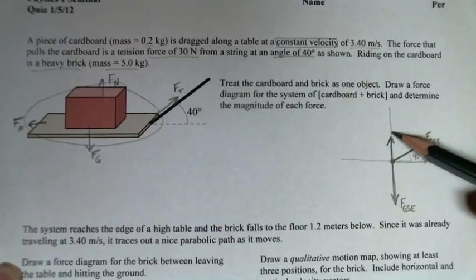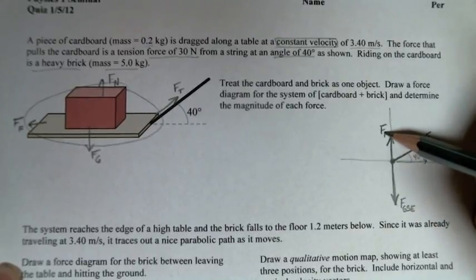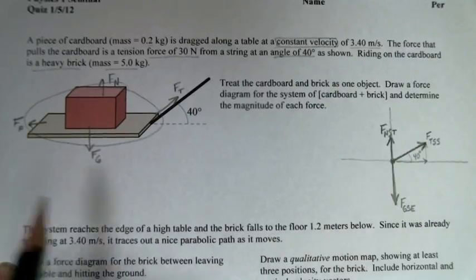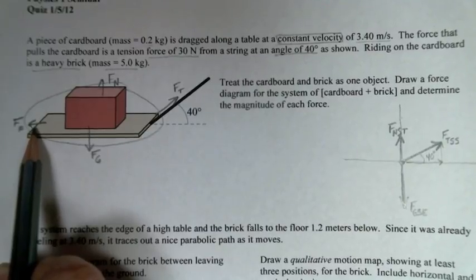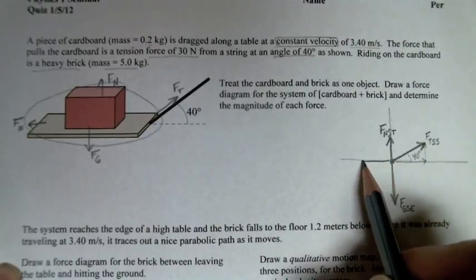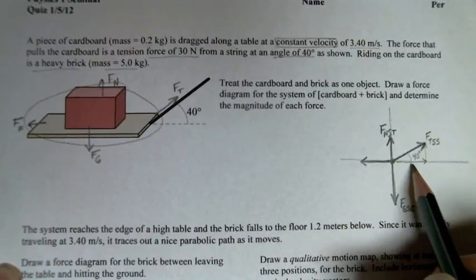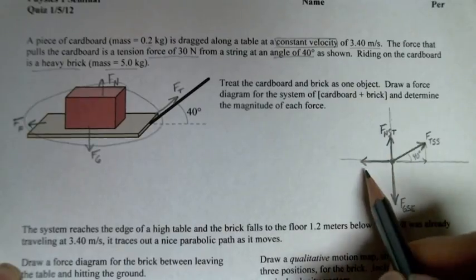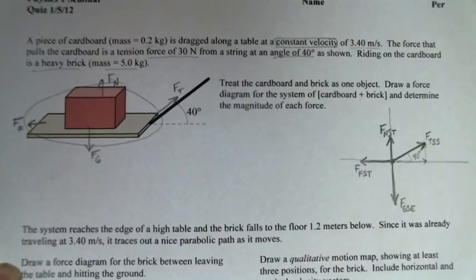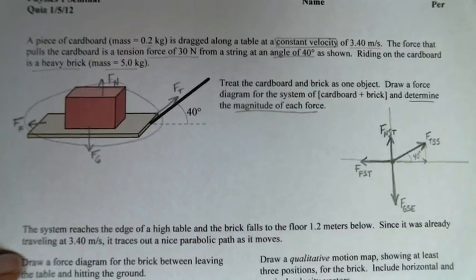So this plus that, which would be added up here, is going to be about as long as this. So this is my normal force on the system from the table. And then my friction force, this is what keeps it going at a constant velocity. So I'm going to draw this to be the same size as this component of that tension force. So this is my force of friction on the system from the table. I need to determine the magnitude of each force, so that's how many newtons.